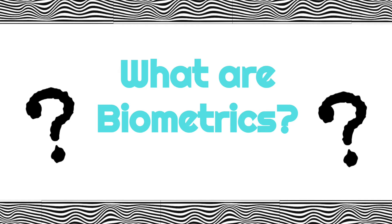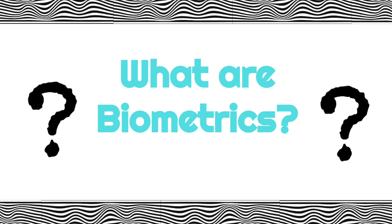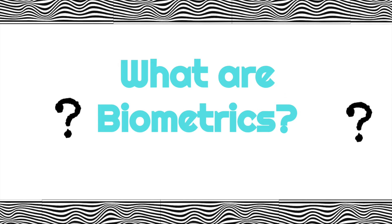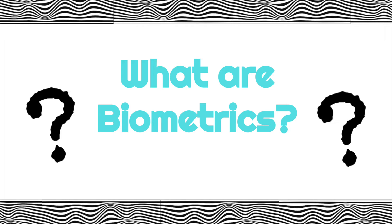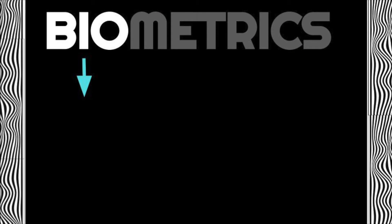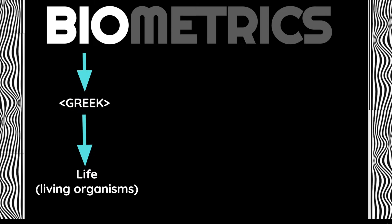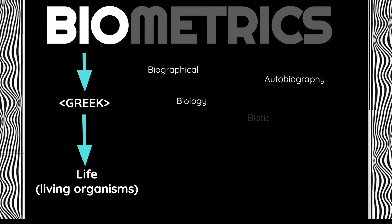Our first question is what are biometrics, or what is the meaning of the word biometrics? The best way to get at this meaning is to explore the word history and roots of the word. The first root is the word bio, which comes from ancient Greece and just means life or anything that is living. You can see the connection between all words that have the root bio in them — they all relate to living creatures or life in some way.